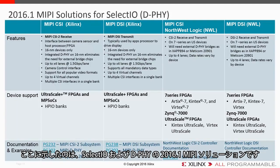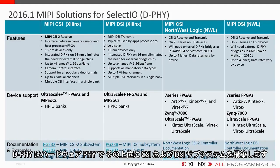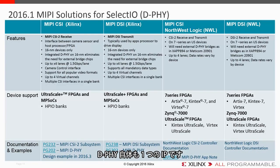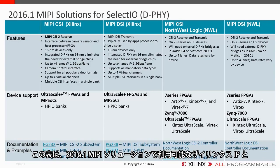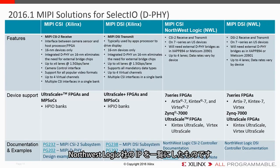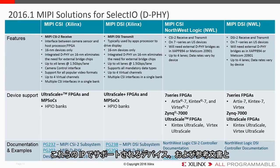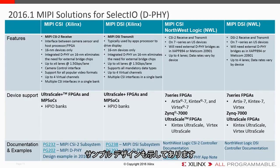Here are the 2016.1 MIPI solutions for the SelectIO and DeFi. DeFi is the underlying hardware PHY that the CSI and DSI subsystems are built upon — it is also its own IP, and more information can be found in PG202. You can also search MIPI in Vivado and see this DeFi IP show up as well. This table breaks down the different IPs available for both Xilinx and the third-party Northwest Logic IP, showing what devices they support and the documentation examples that go along with each IP.